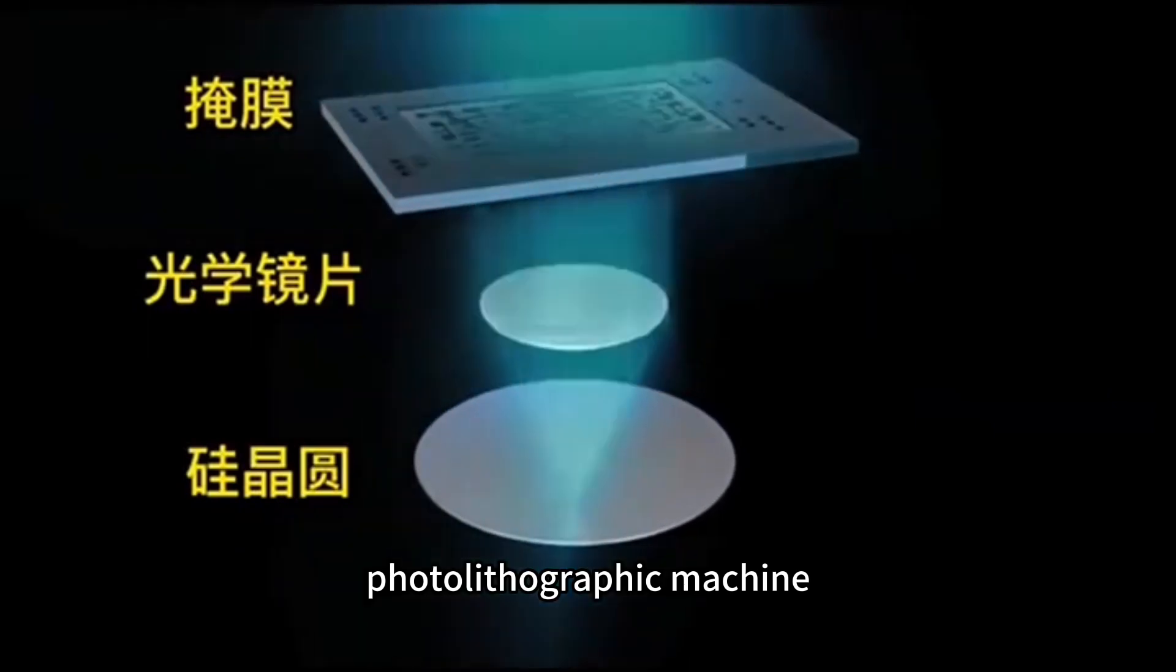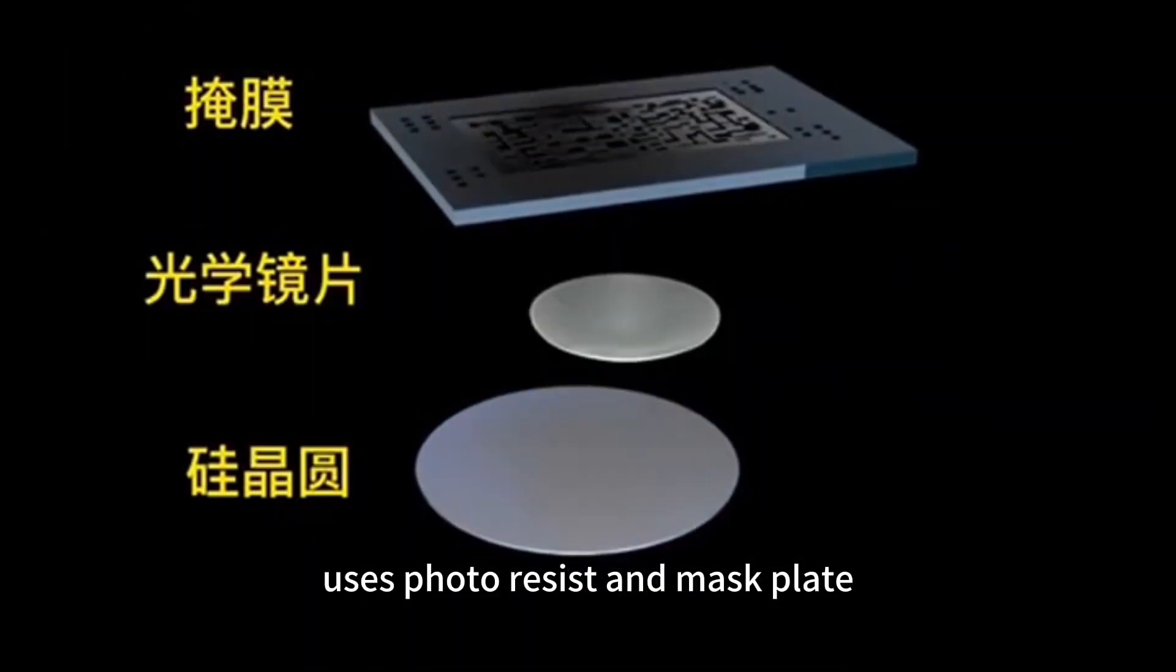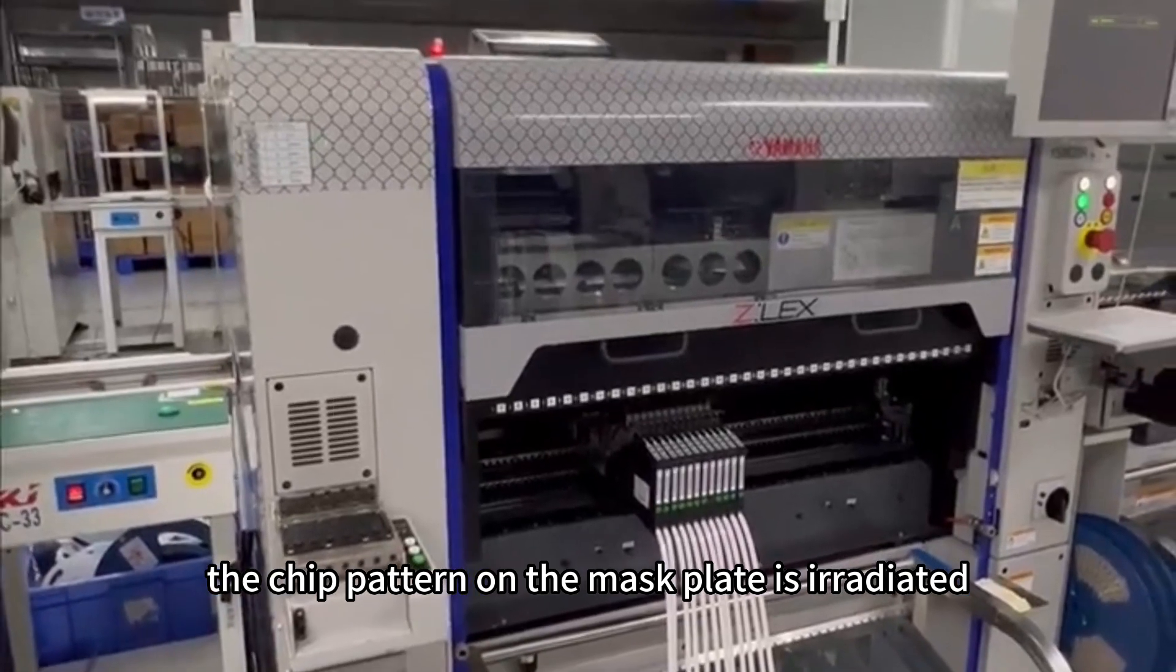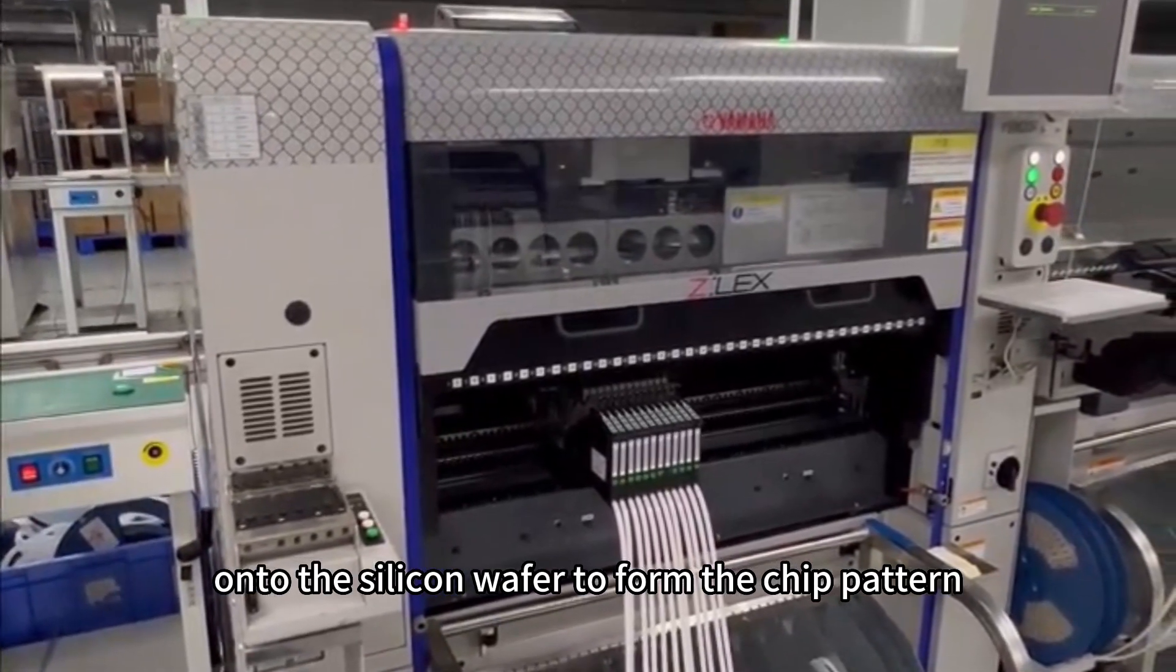Working principle. Photolithographic machine uses photo resist and mask plate. The chip pattern on the mask plate is irradiated onto the silicon wafer to form the chip pattern.